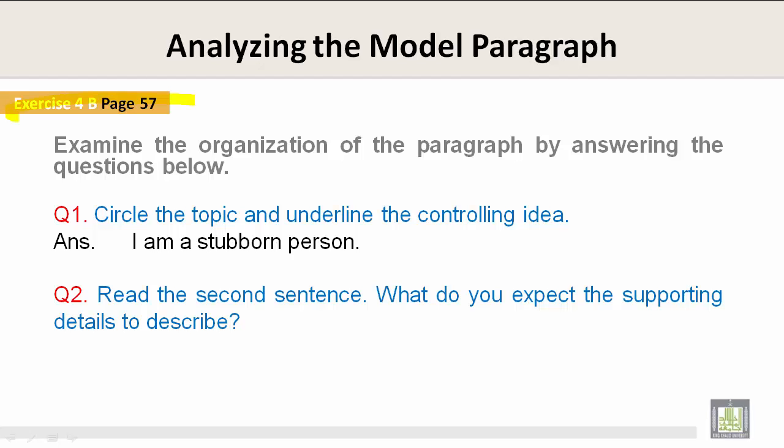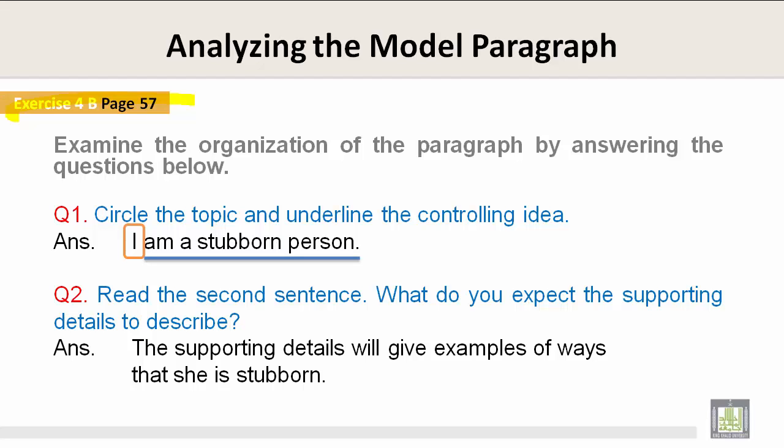Examine the organization of the paragraph by answering the following questions. Exercise 4B, page 57, question number one: Circle the topic and underline the controlling idea. The answer is 'I am a stubborn person.' The topic is 'I,' and the controlling idea is 'am a stubborn person.' Question two: Read the second sentence. What do you expect the supporting details to describe? The supporting details will give examples of ways that she is stubborn.